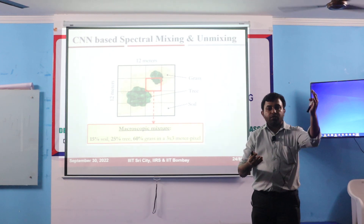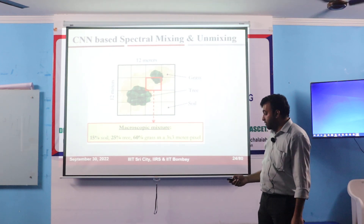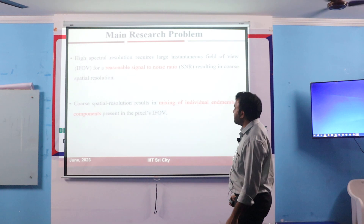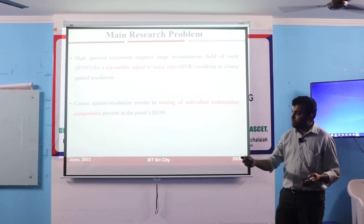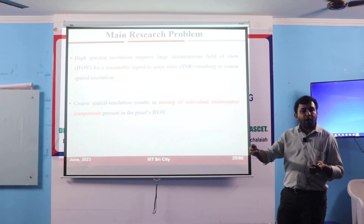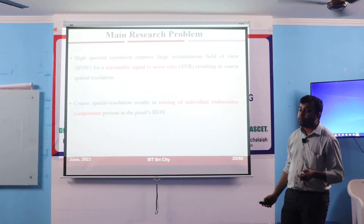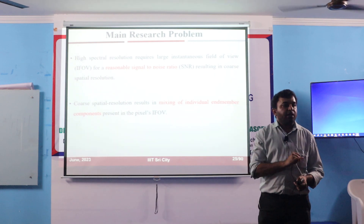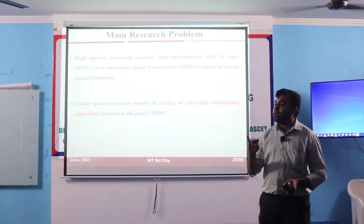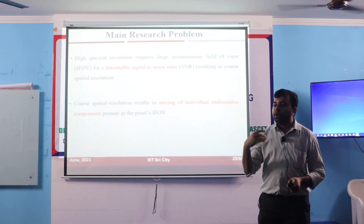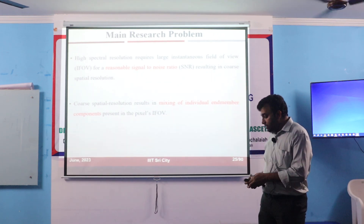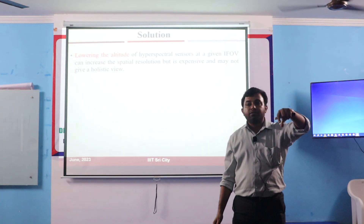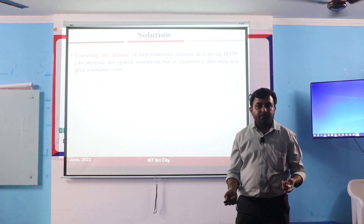So these are some of the research problems. One main problem is the resolution trade-off — you cannot have an image with both high spatial and high spectral resolution together. So how can you solve that problem? One solution is to lower the altitude of the sensors if you use UAVs.